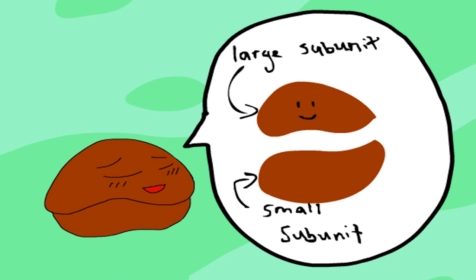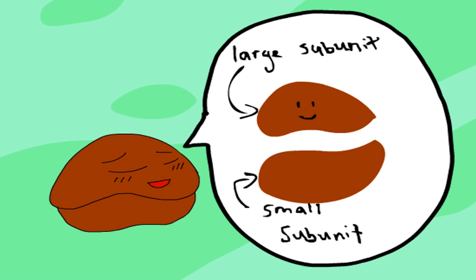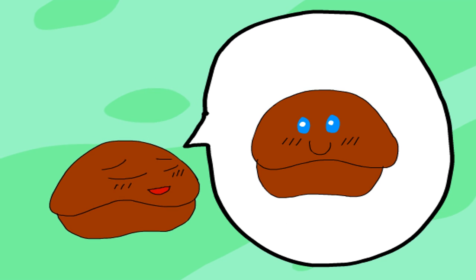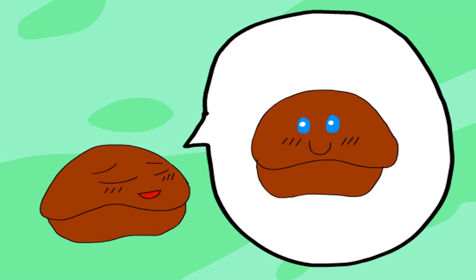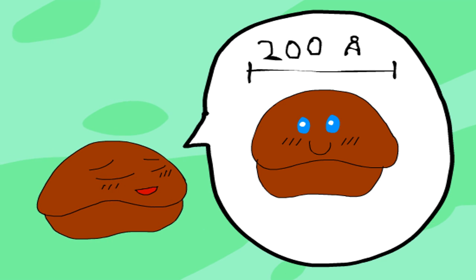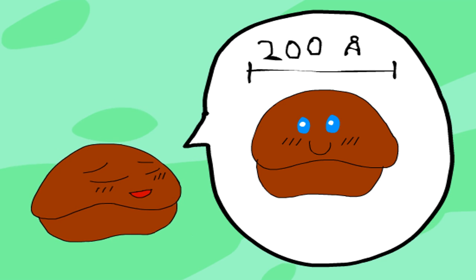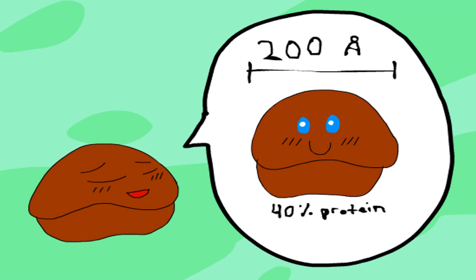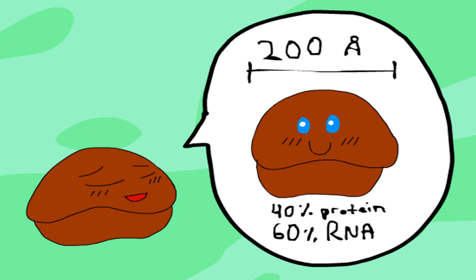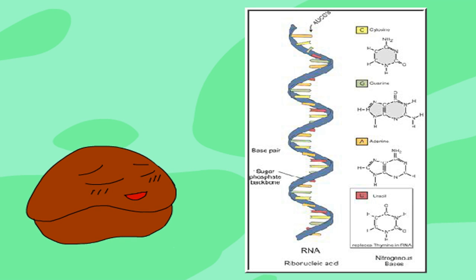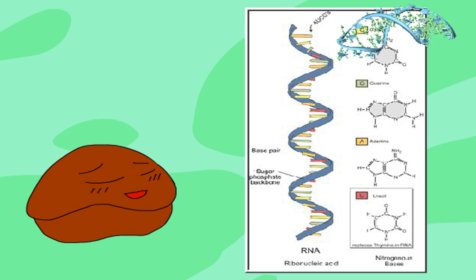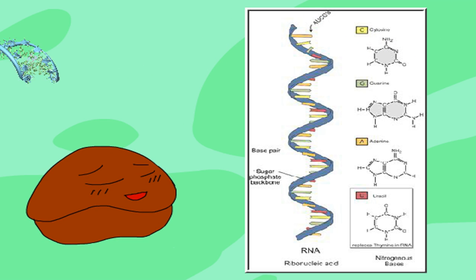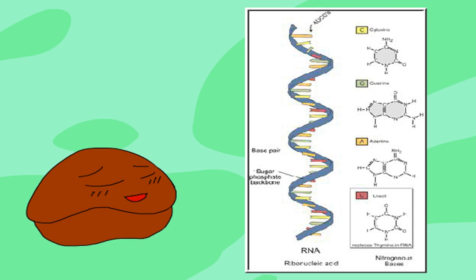There are two pieces, or subunits, to every ribosome. Ribosomes can vary in size, although an average ribosome measures about 200 angstroms in diameter and consists of about 40% protein and 60% RNA. RNA stands for ribonucleic acid, whose role consists of carrying instructions from the DNA for controlling the synthesis of proteins.